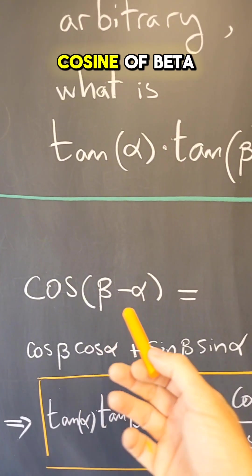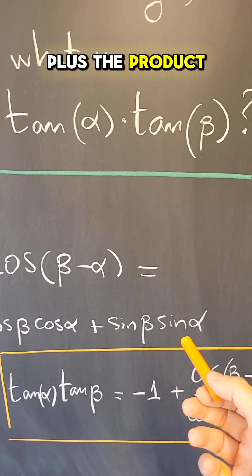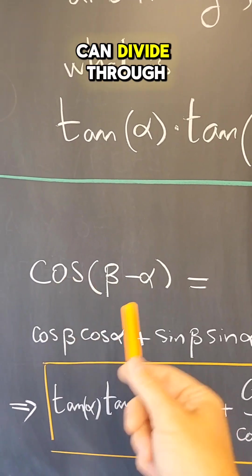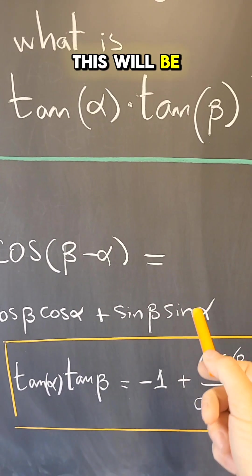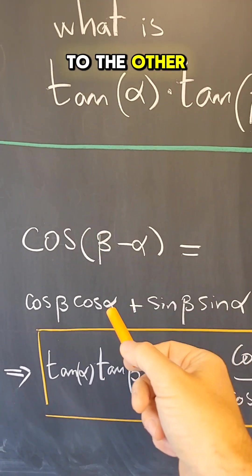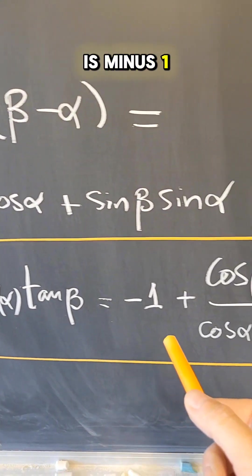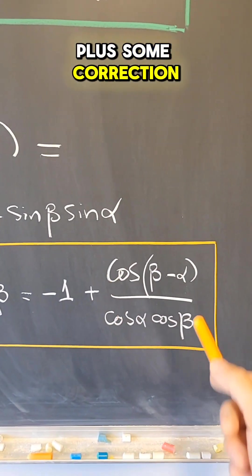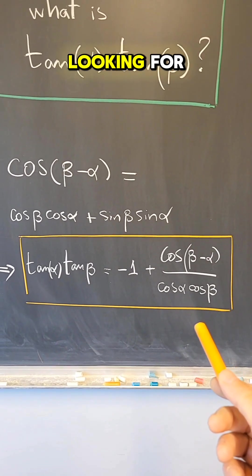So if you start from the cosine of beta minus alpha, that is the product of cosines plus the product of sines. And now I can divide through by the product of cosines. This will be the product of tangents. And this brought to the other side of the equation gives me that the tangent of alpha times the tangent of beta is minus one plus some correction factor in terms of cosines. So here's the equation I was looking for.